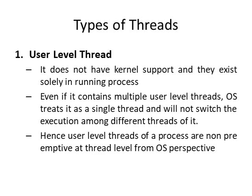User-level threads do not have any kernel or OS support — they exist only within the running process. There can be multiple user-level threads in a process, but all these multiple user-level threads are considered as a single thread, and there is no switching of execution among them within the process. Context switching of user-level threads cannot occur unless voluntarily done by the thread. From the OS perspective, user-level threads are non-preemptive — switching occurs only after a thread completes its execution voluntarily.